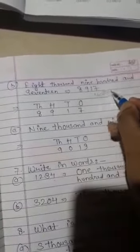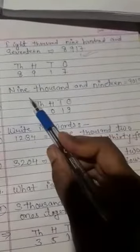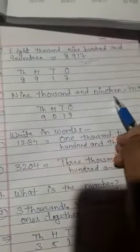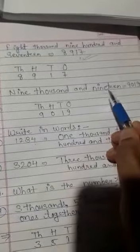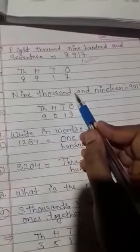Nine thousand and nineteen. Nine thousand, right 9 in thousands place. Nineteen: one ten and nine ones. Here hundred is not given, so we put zero in hundreds place. Nine thousand and nineteen: 9019.